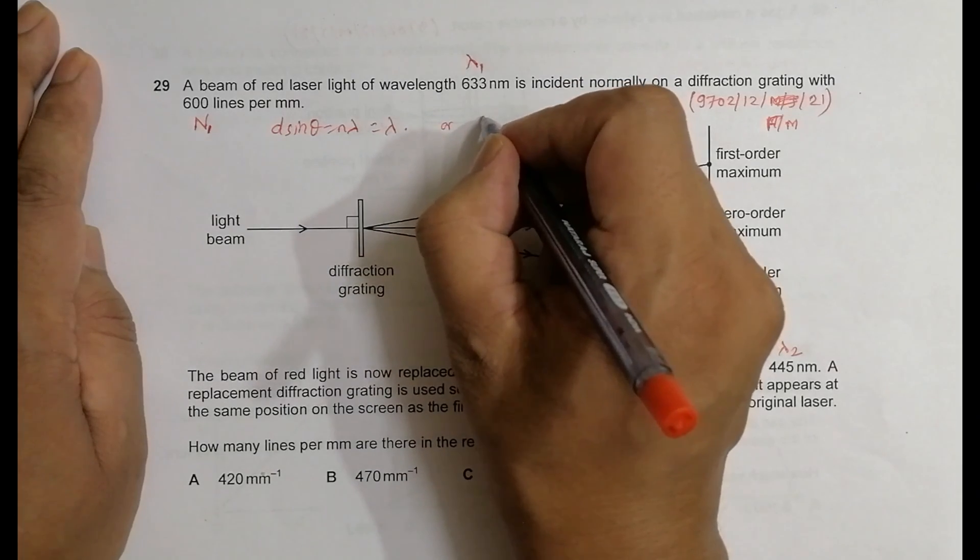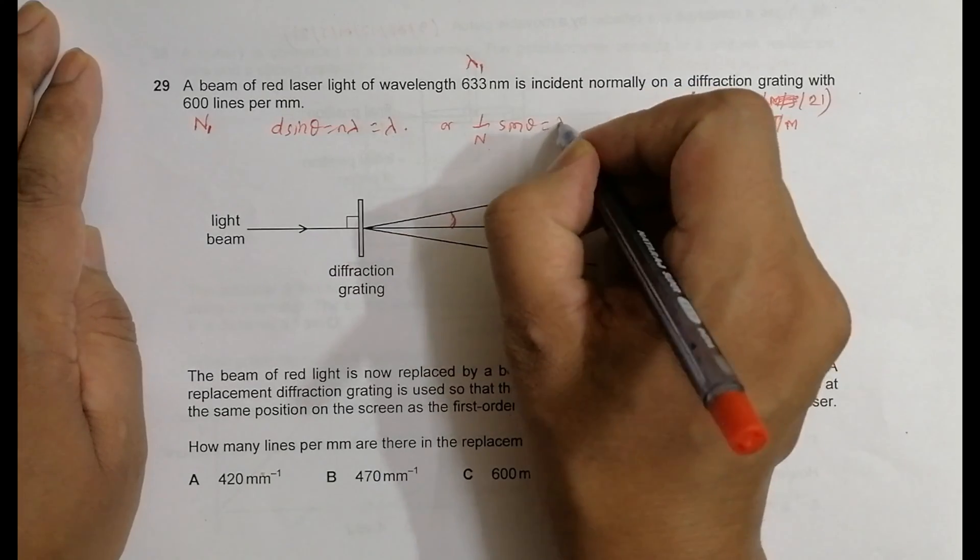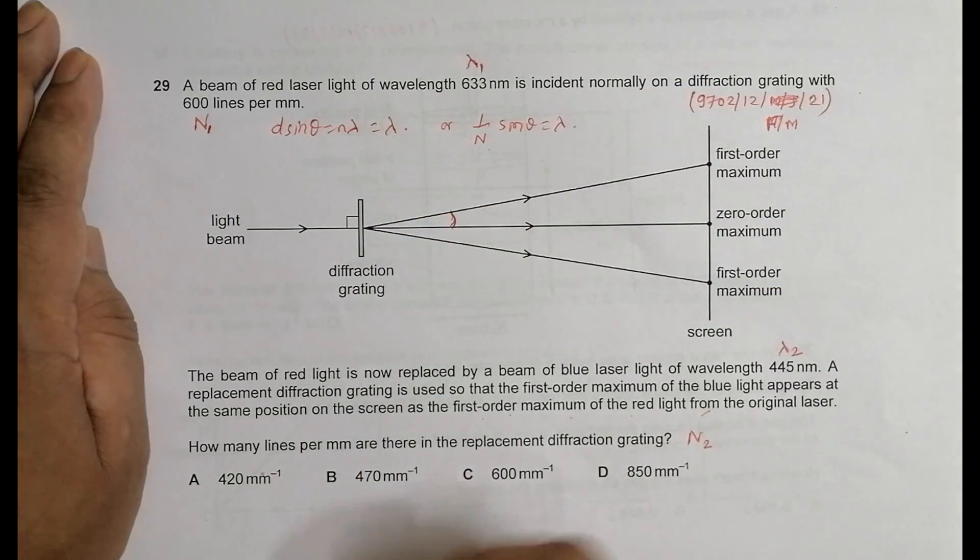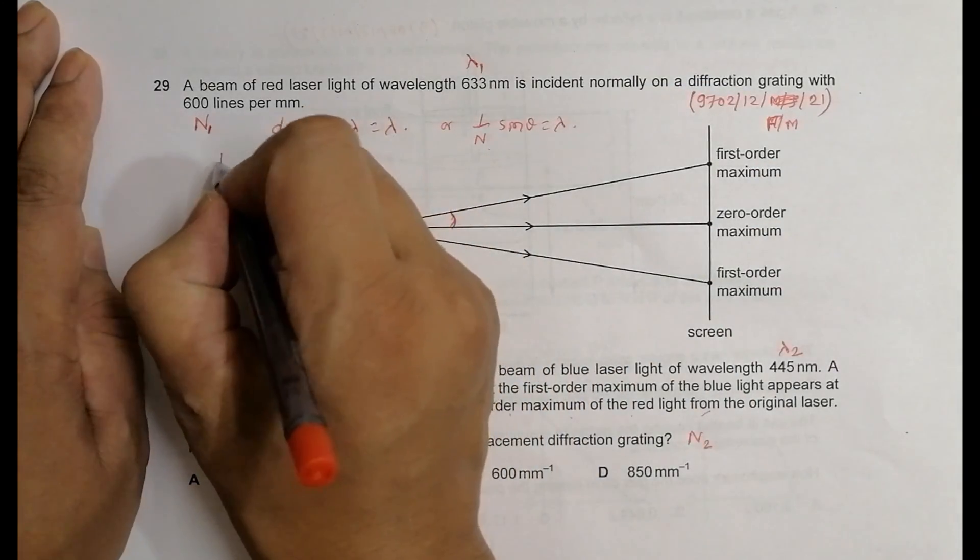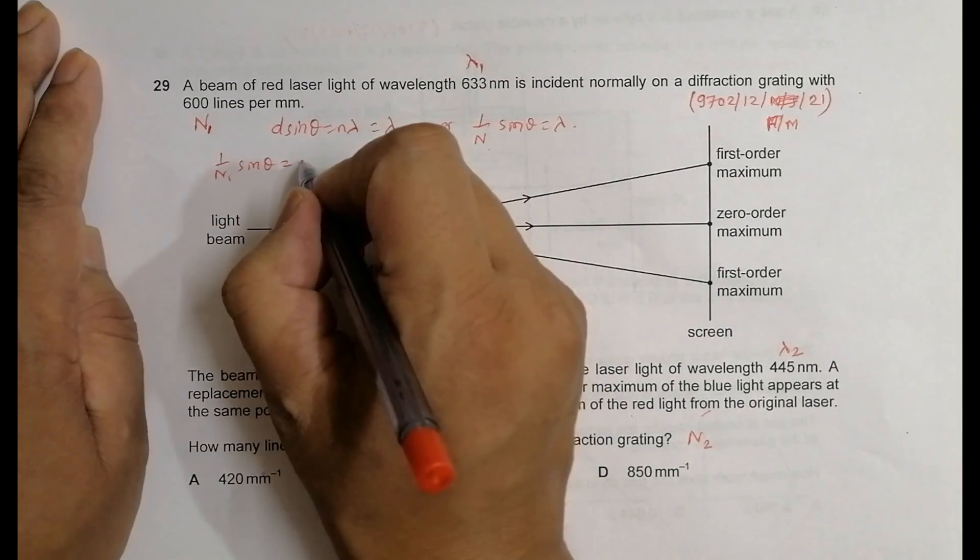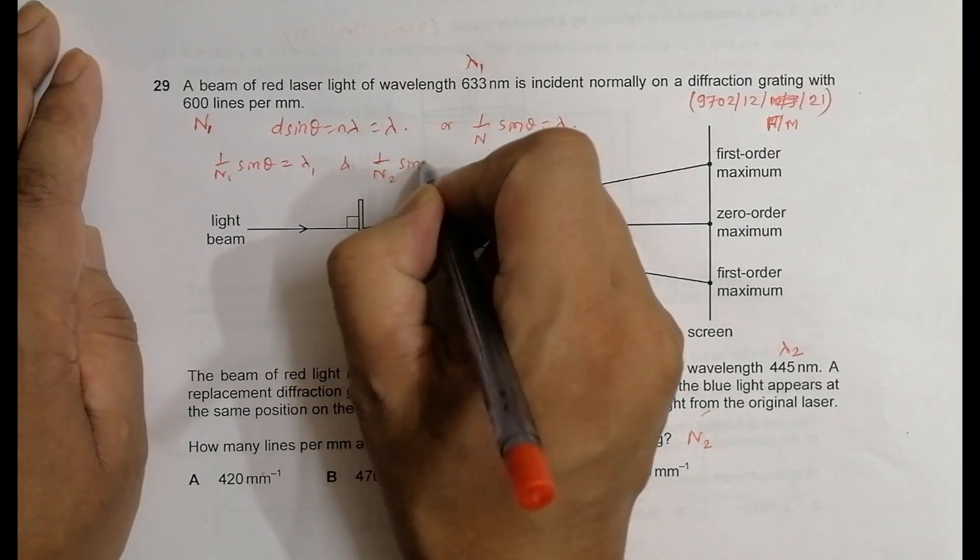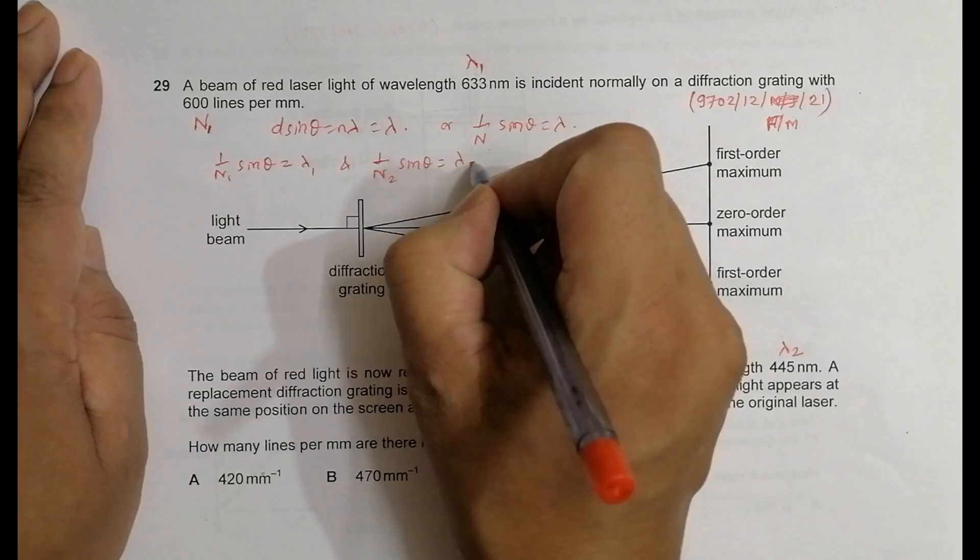So for the first case we have 1 by n1 sine theta equals lambda 1, and in the second case we have 1 by n2 sine theta equals lambda 2.